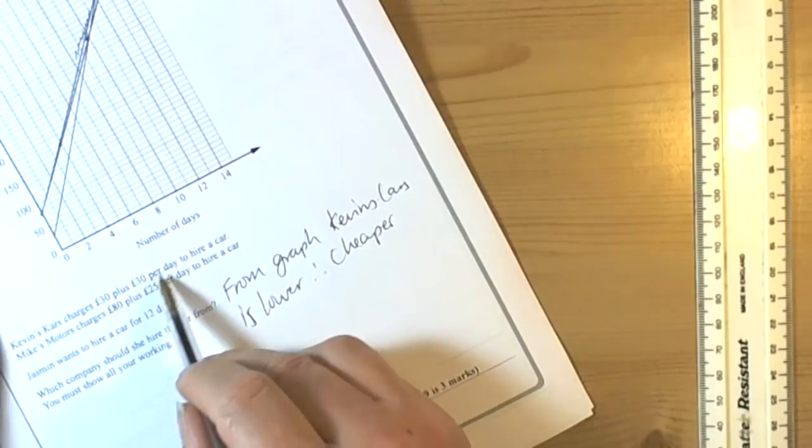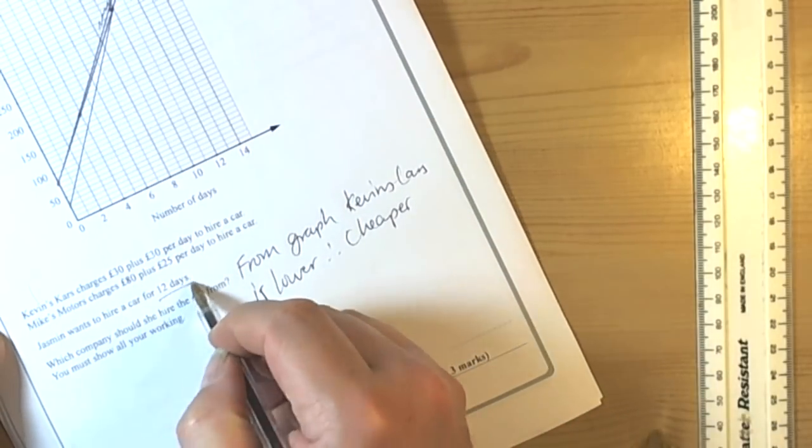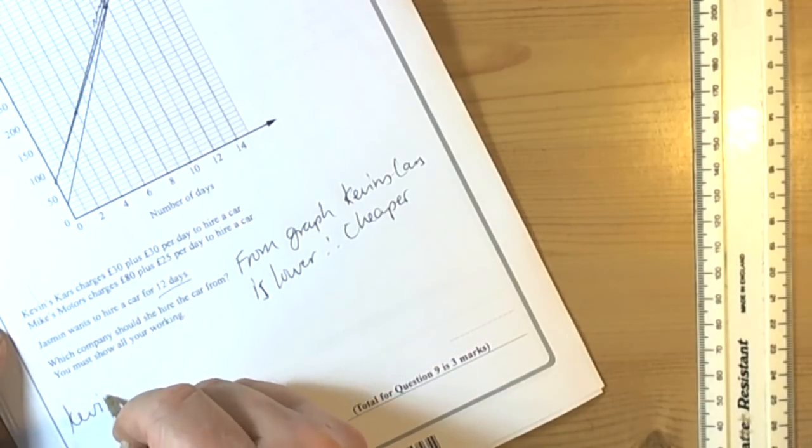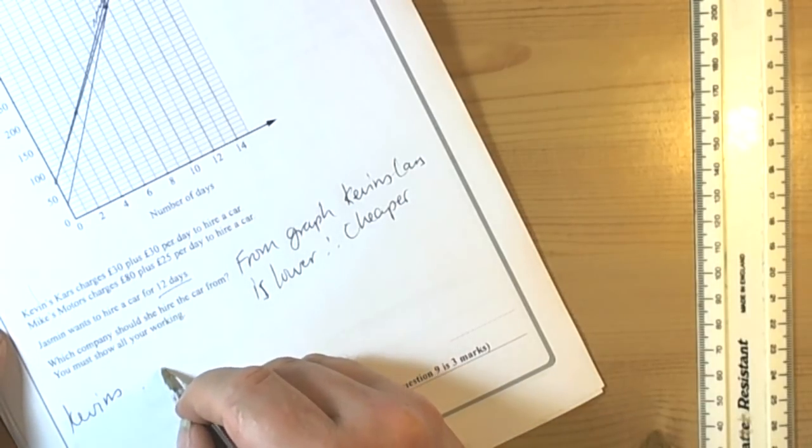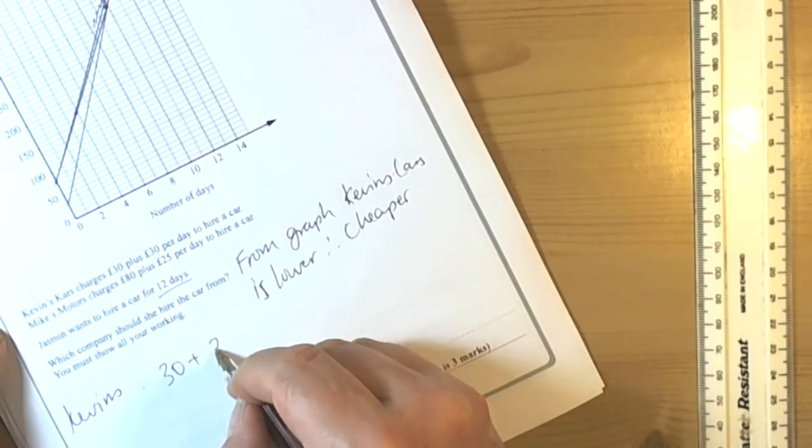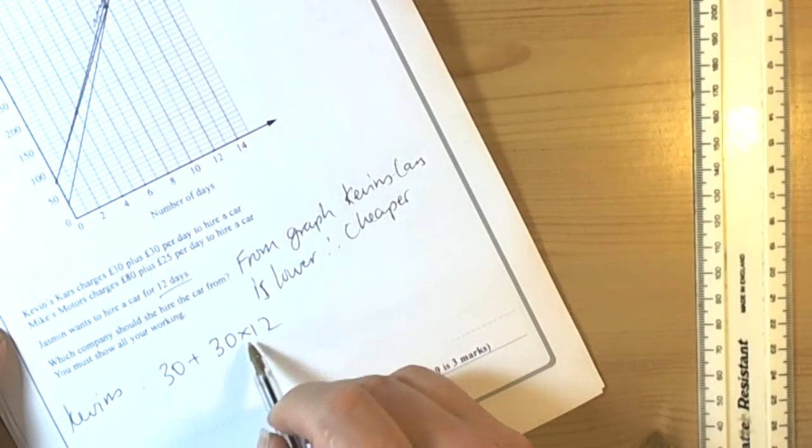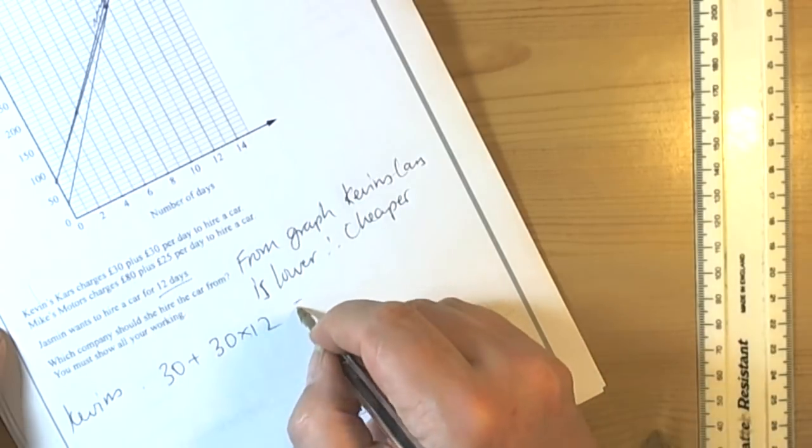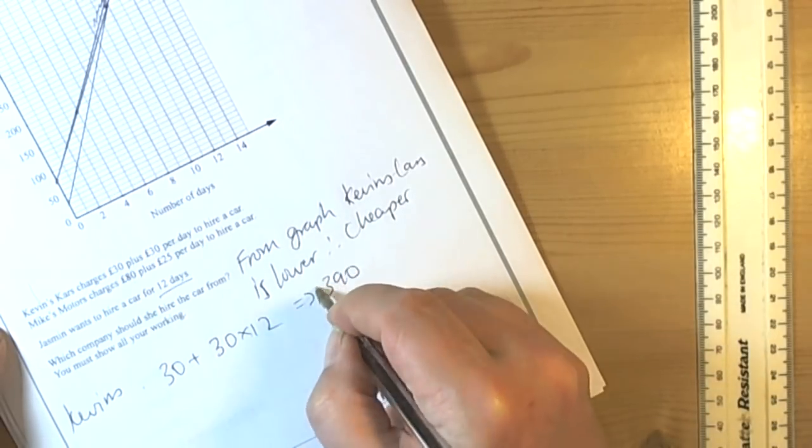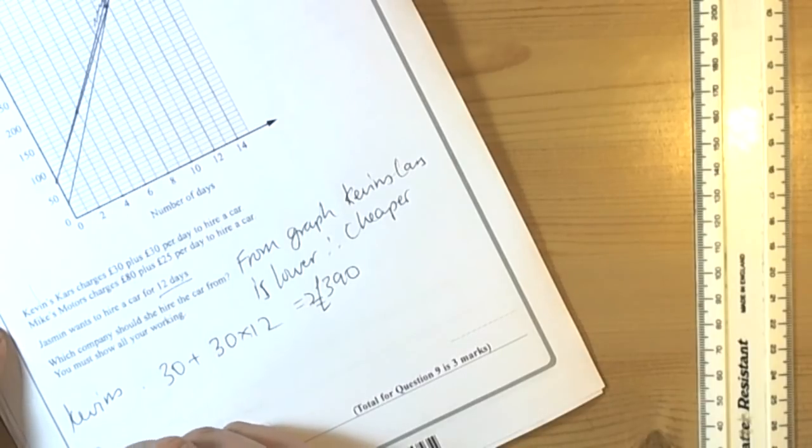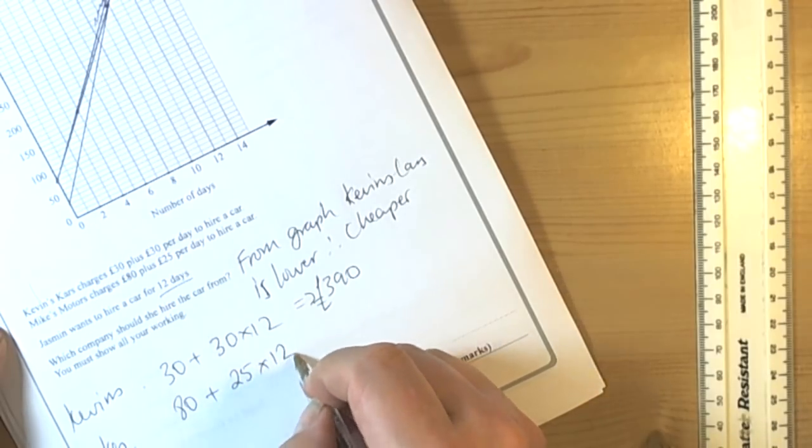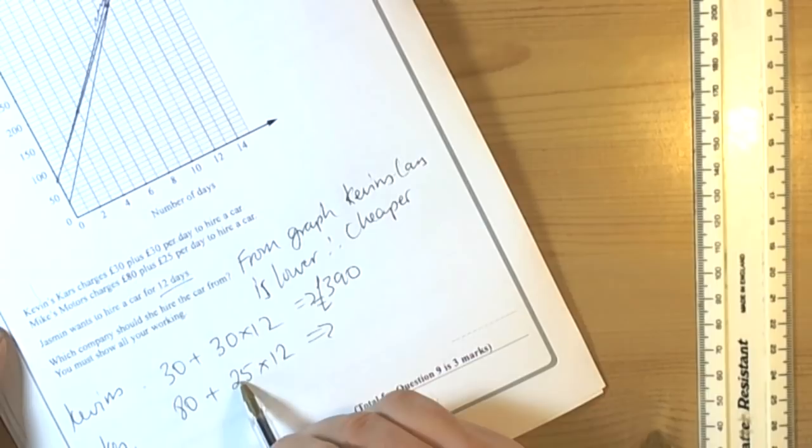But of course they've given us the two formulas, so we could show what happens for 12 days. I'm going to do a check. Kevin's Cars is £30 plus 30 times 12. BIDMAS says do the multiplication first. 30 times 12 is £360, so that's going to be £390. For Mike's Motors it's £80 plus £25 times 12. When we look at this we've got £380.